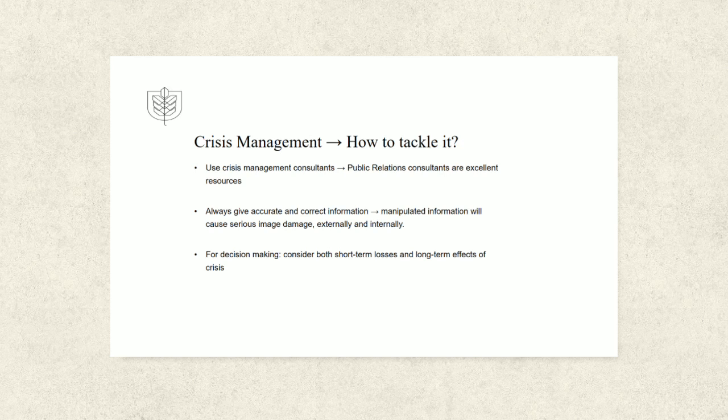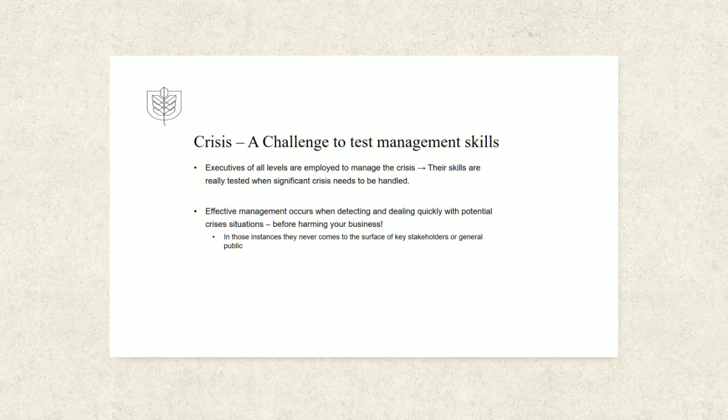Fifth, always give accurate and correct information. Trying to manipulate information about the crisis will seriously backfire if it is discovered, also internally in your company. Sixth, when deciding on open actions, consider not only the short-term losses, but focus also on the long-term effects. Executives at all levels of the organization are employed to manage crises, and often do so on a daily basis — their skills are really tested when they have to manage significant crises.